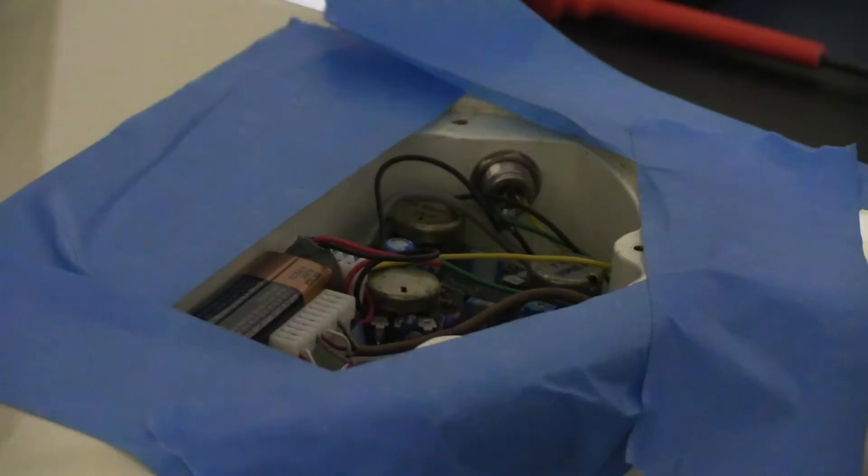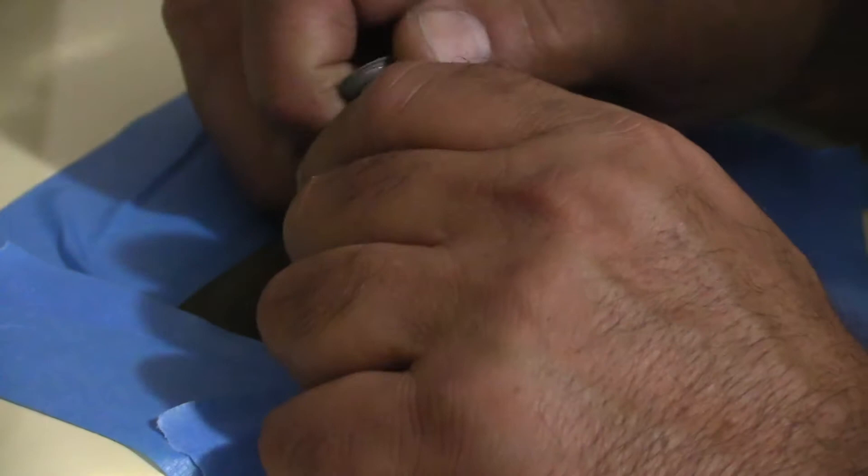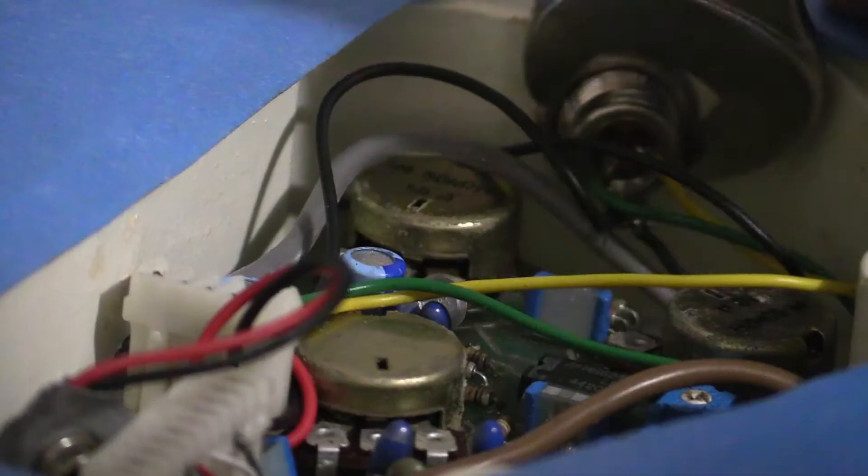If your bass is active, obviously disconnect the battery and put some tape around the paint so that you don't scratch it accidentally.